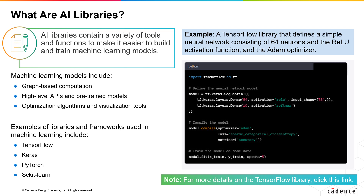PyTorch is an open-source machine learning library developed by Meta, designed to make it easy to build and train deep learning models. It's known for its flexibility and dynamic computational graph, making it a popular choice for researchers and developers.